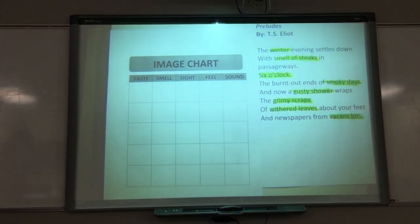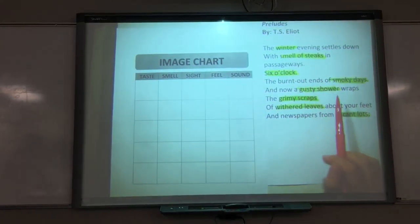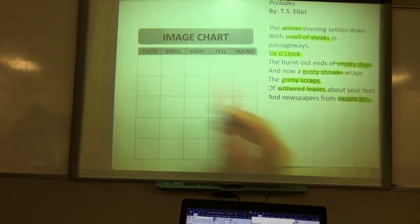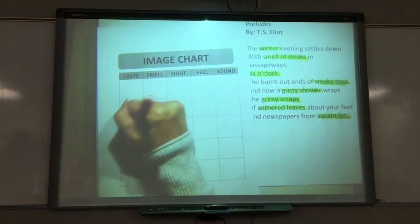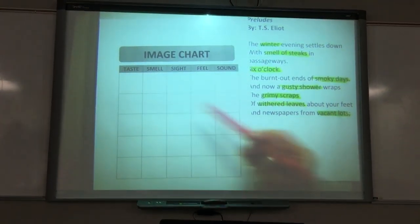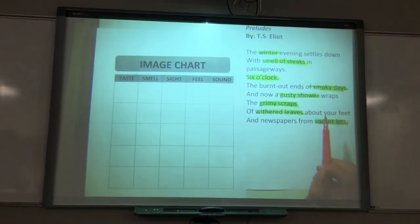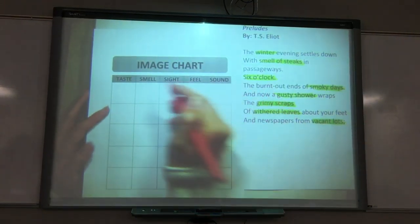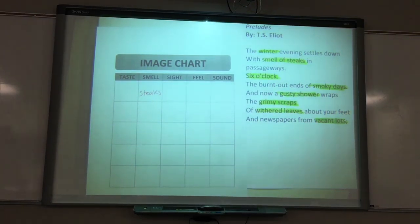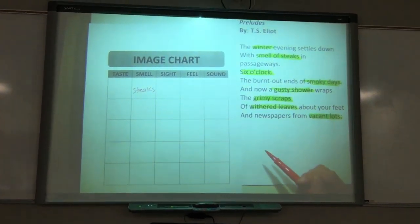Let's go through taste first. Did we see any examples of taste in our poem? Doesn't look like it, so we can keep that blank. How about smell? Is there any talk of smell in our poem? Smell of steaks — perfect. So we can write steaks in the smell box. Any other smell? Doesn't look like it, so we can move on.